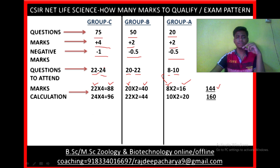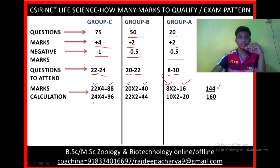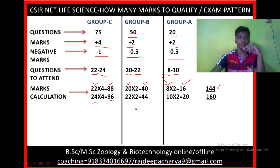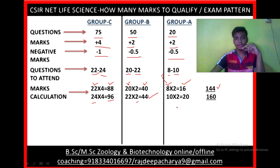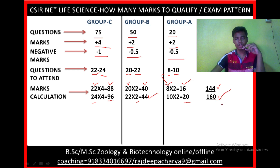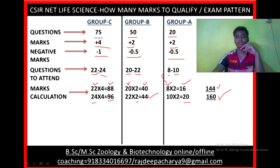Now let's talk about the maximum number of questions. If you attempt 24 questions from Group C, each carrying 4 marks, you get 96 marks. If you attempt the maximum 22 questions from Group B, each carrying 2 marks, you get 44 marks. If you attempt 10 questions from Group A, each carrying 2 marks, you get 20 marks. So 96 plus 44 plus 20 equals 160, which is also enough to qualify CSIR Net Life Science and get JRF with a rank.